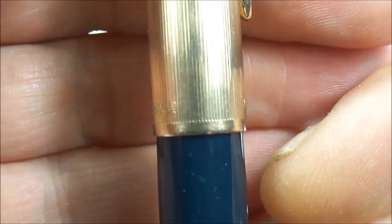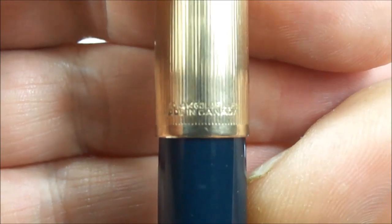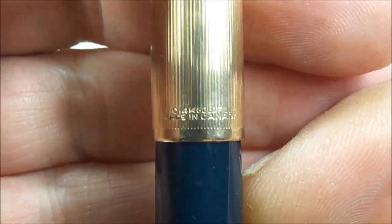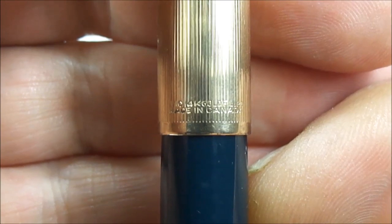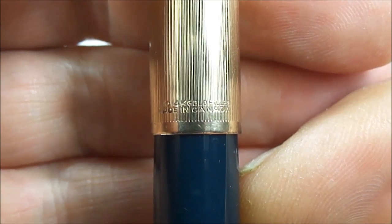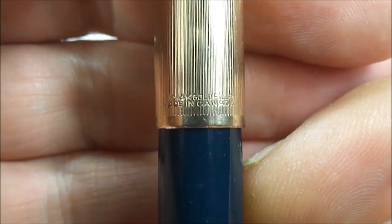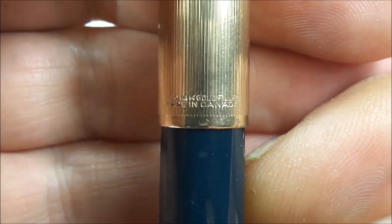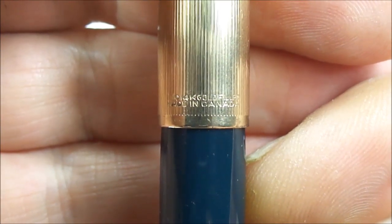Now if we turn it round to the back, you can see the imprint reads 1/10 14-carat gold filled, and then just underneath there it's got the words Made in Canada.